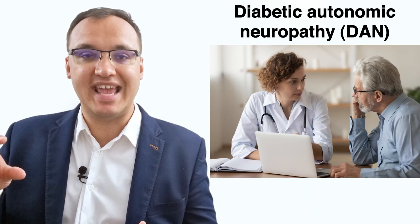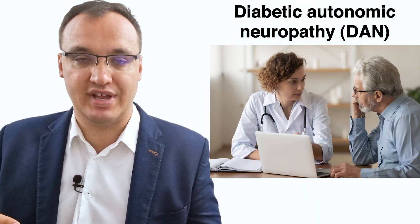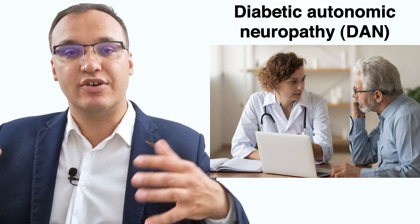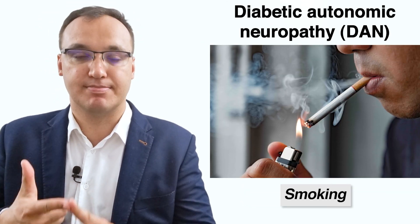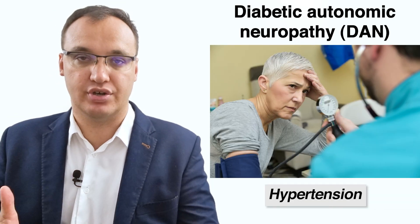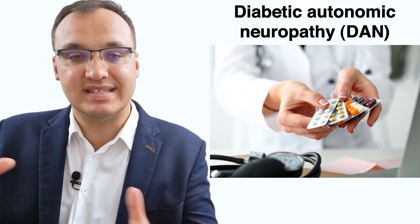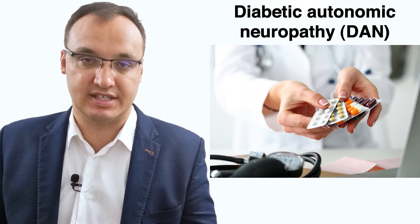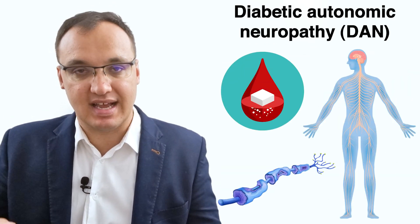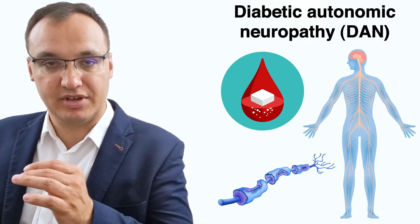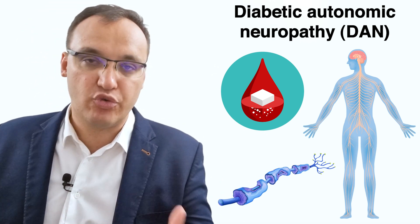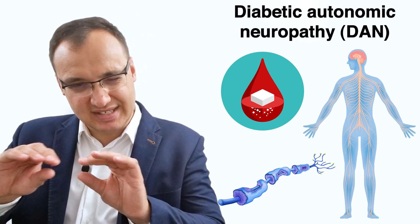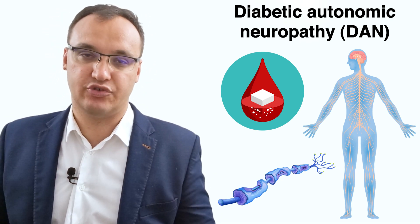Generally, treatment aims to prevent disease progression, and that includes reducing risk factors such as hyperglycemia — high blood sugar — smoking, hypertension, hyperlipidemia, and so on. We can also give medicines depending on what symptoms the patient has. Now let's discuss how diabetic autonomic neuropathy affects each organ system and how we treat these complications, dealing superficially with treatment here.